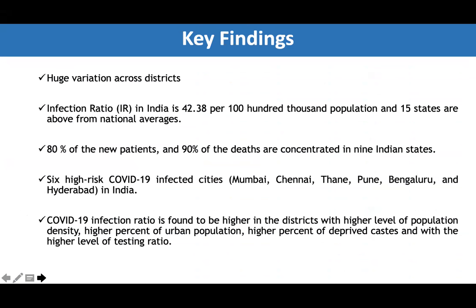We observed huge variation across districts in confirmed cases, COVID-19 infection ratio, and number of deaths. The infection ratio in India is about 42.3 per 100,000 population, and 15 states are above the national average. 80% of new patients and 90% of deaths are concentrated in nine Indian states. Six high-risk COVID-19 cities are Mumbai, Chennai, Thane, Pune, Bangalore, and Hyderabad. COVID infection ratio is higher in districts with higher population density, higher percent urban population, higher percent of deprived scheduled caste population, and higher testing ratio.